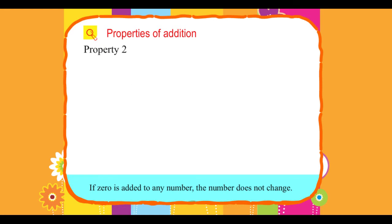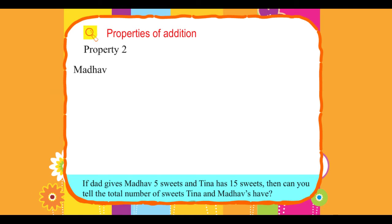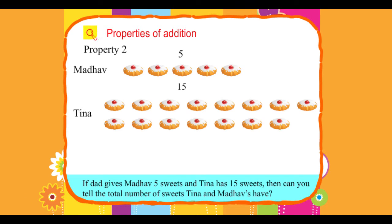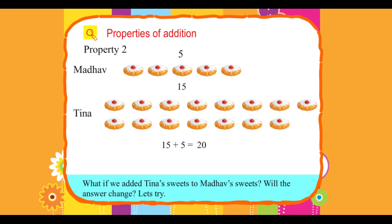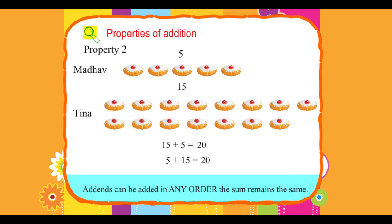Property 2: If dad gives Madhav 5 sweets and Tina has 15 sweets, then the total number of sweets Tina and Madhav have is 15 plus 5 equals 20. We added Tina's sweets to Madhav's sweets. Will the answer change? Let's try — 5 plus 15 equals 20. Addends can be added in any order; the sum remains the same.